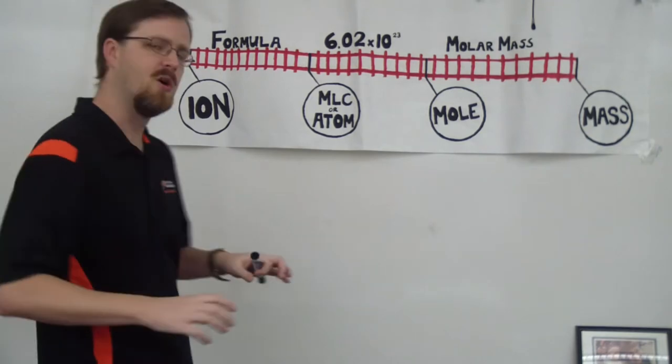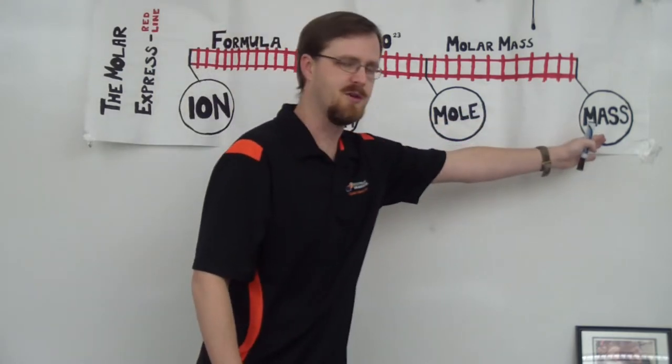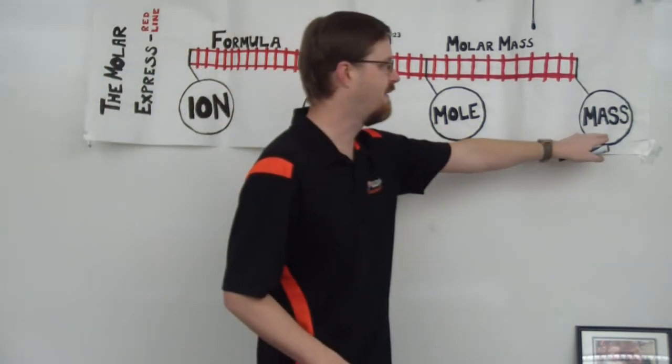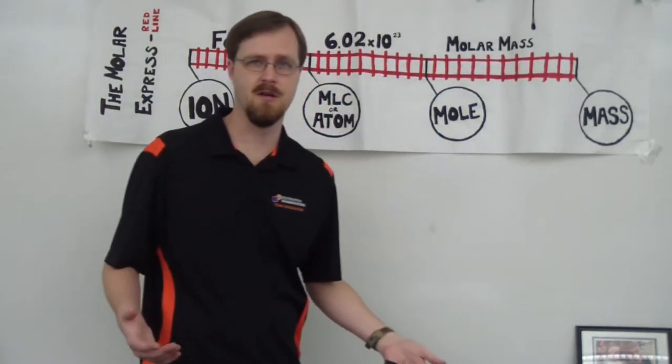Okay, so just like our stations, you know how they go in order, these are the units that we use to convert in all of the conversions that we do. So let me show them to you in order. We've got ions, we've got molecules or atoms, we've got moles, and we have mass, which of course is measured in grams.